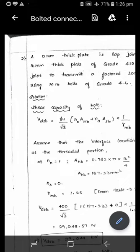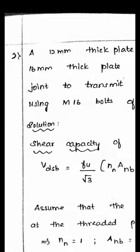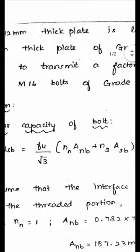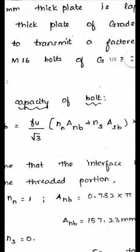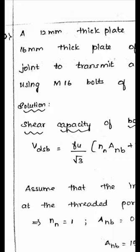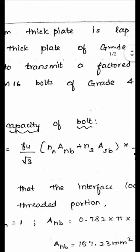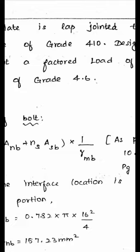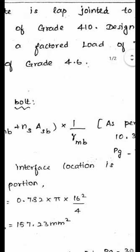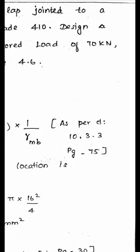Starting the second problem in the bolted connection: a 12mm thick plate is lap jointed to a 16mm thick plate of 410 grade. Design a joint to transmit a factored load of 70 kilo Newton. The load is already factored. If given as a working load, we have to factor it by multiplying by the load factor 1.5.